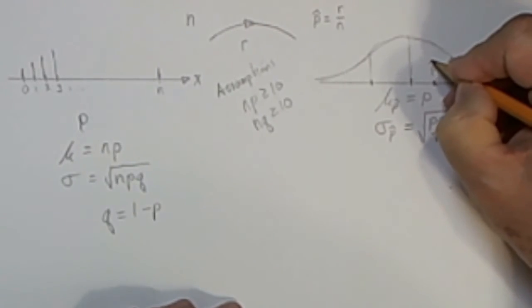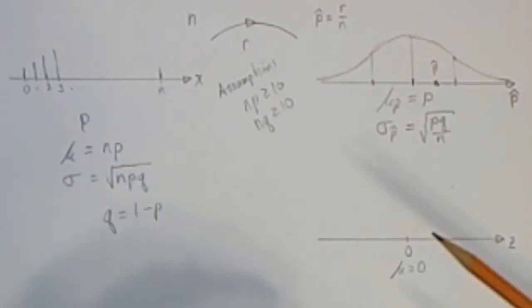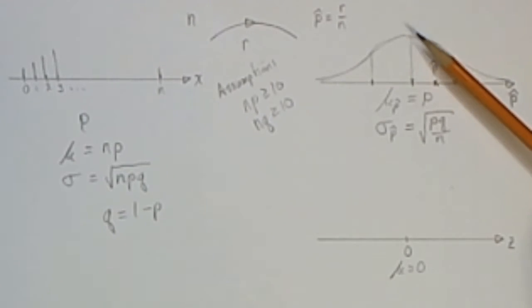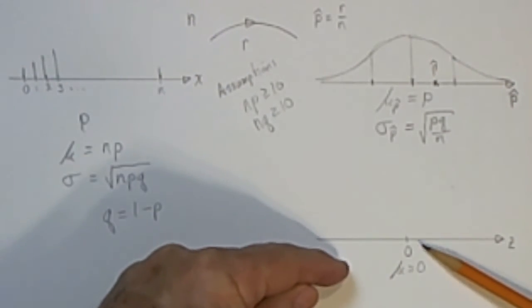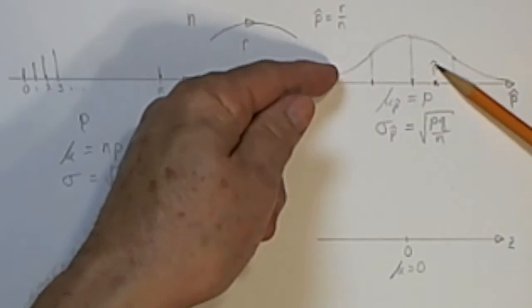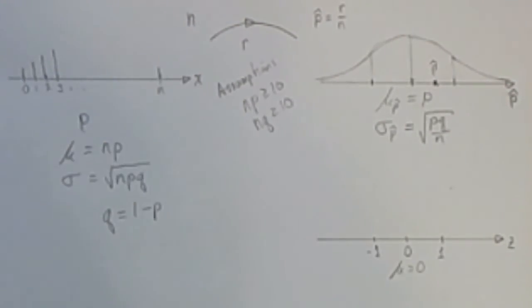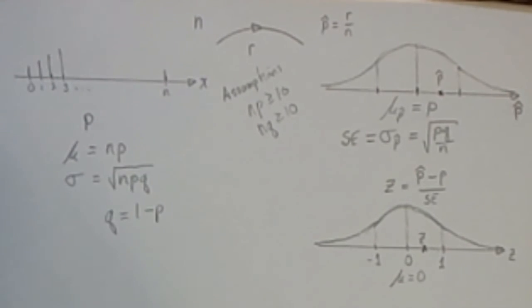We can assume it's a reasonable point estimate, but it's not exactly p. Since this is a normal distribution, we can convert everything and measure them in standard deviations by converting these values to z-scores. The z-distribution has a mean of 0 and a standard deviation of 1.